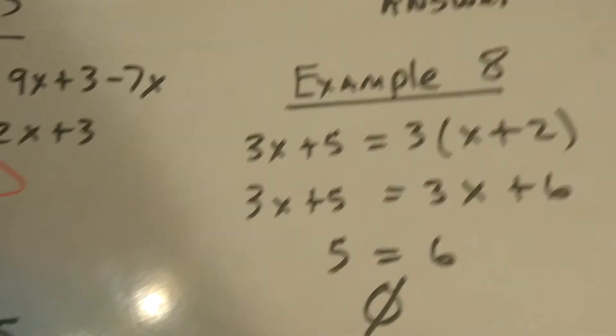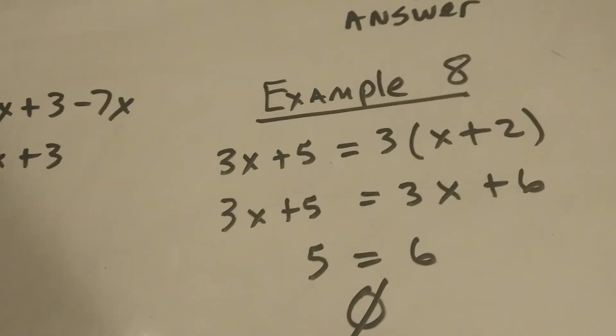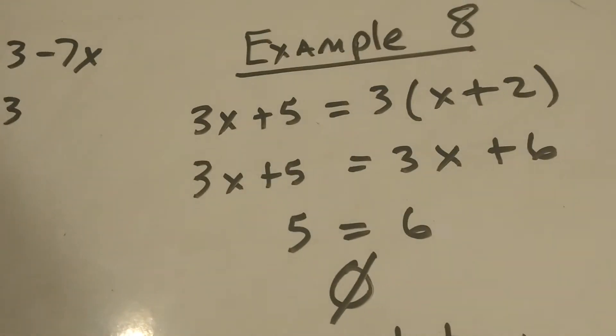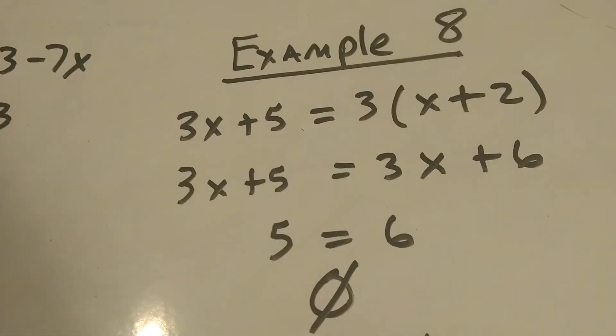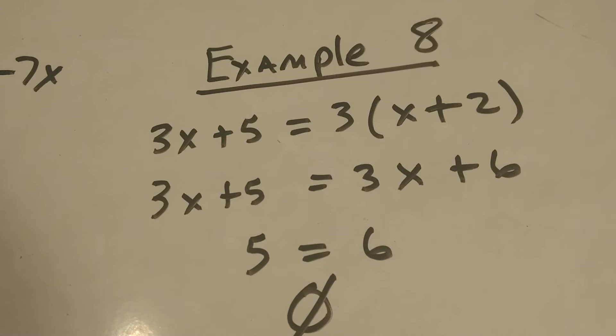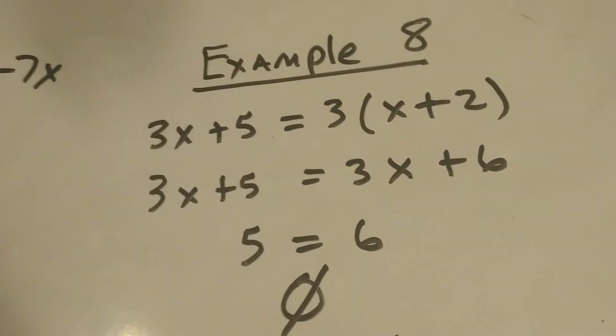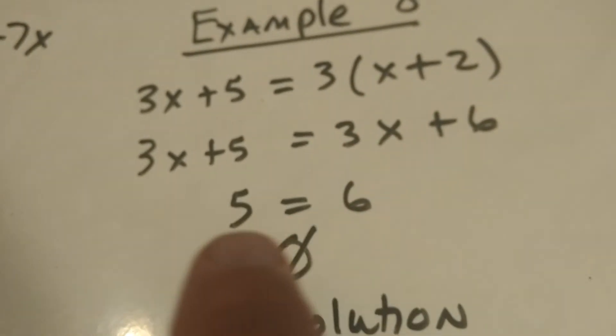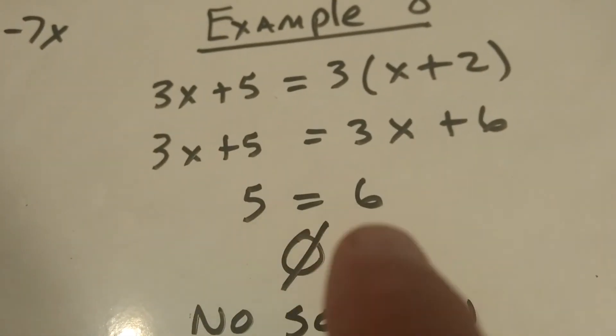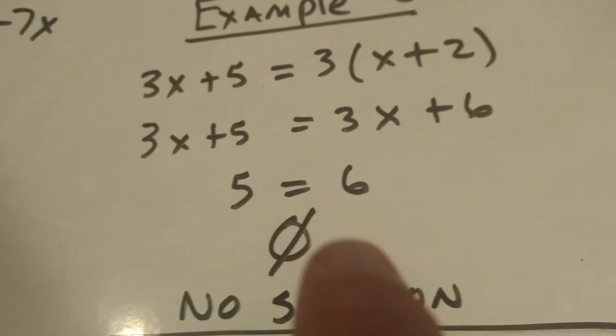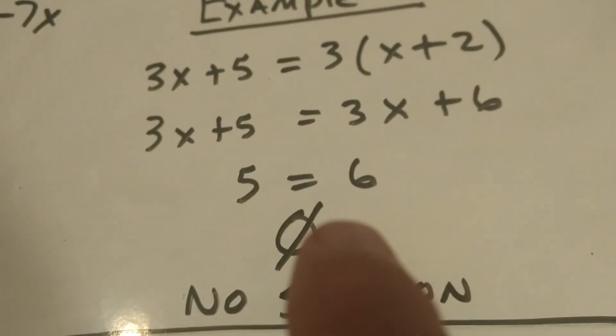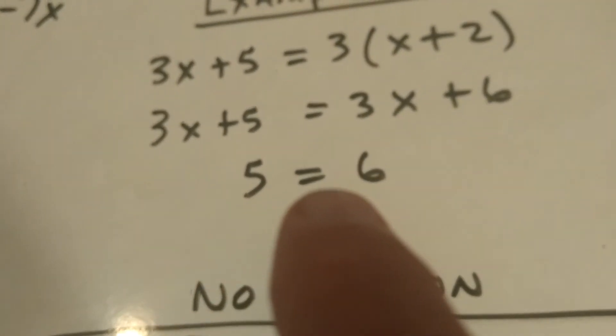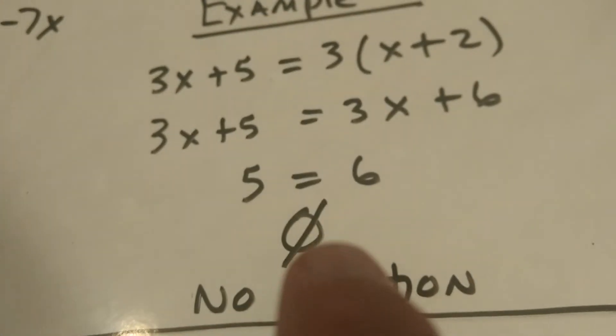Another thing you've got to worry about in terms of any algebraic problem, any kind of inequality or equality, is this. This is example A. We have 3x plus 5 equals 3 times x plus 2. First thing I do is distribute the 3, get 3x plus 6. Subtract this 3x over, I get 0, I get 5 equals 6. Anytime I solve an algebraic equality or inequality, I get a different number on both sides, it's no solution.